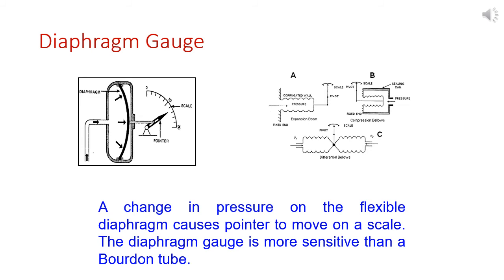Another type of pressure measuring device is the diaphragm gauge. The diaphragm is made of plastic or rubber-based material that can expand easily when pressure changes. It is connected to a pointer and scale mechanism. Whenever the diaphragm moves due to a pressure change, the pointer changes accordingly and we can read the pressure from the scale. While the Bourdon tube is used for large pressure changes, the diaphragm gauge can accommodate and read even very small pressure changes effectively.